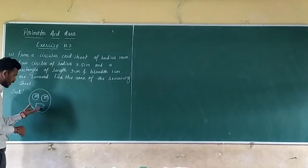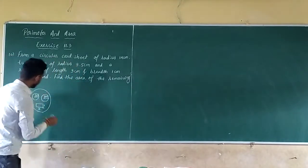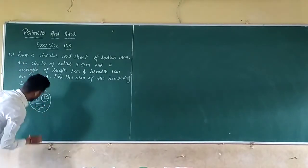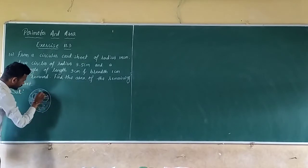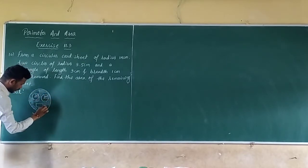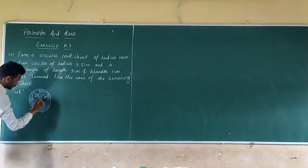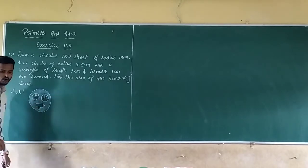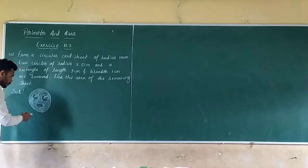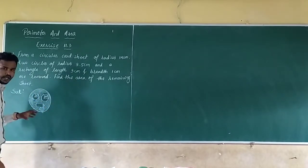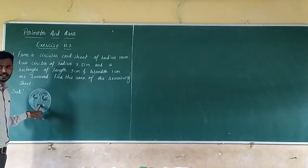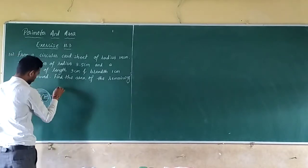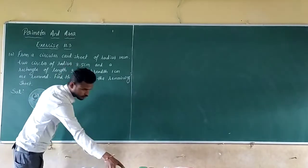So if you remove these 2 circles and the rectangle, what will remain is this shaded region — that is the remaining area. To find it: find the area of the bigger circle, then subtract the area of the 2 small circles and the rectangle, and you will get the answer.